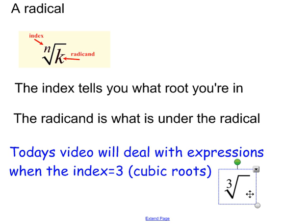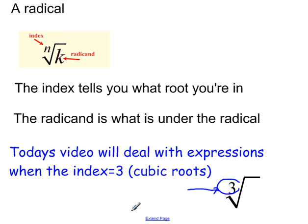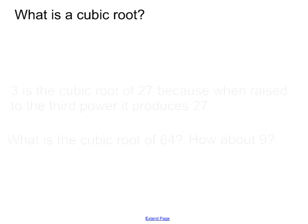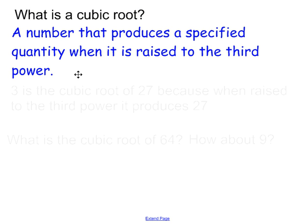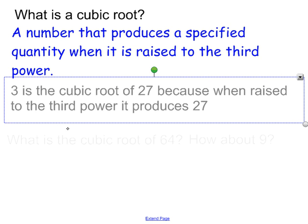Today's video will deal with expressions that look like this. You know you're dealing with a cubic root because you see the index right over here is a 3, which indicates that we're dealing with cubic roots — not square roots. So what is a cubic root? A cubic root is a number that produces a specified quantity when it is raised to the third power. For example, 3 is the cubic root of 27 because when raised to the third power, it produces 27.